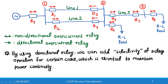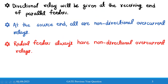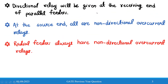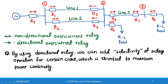I have noted three important points for choosing directional versus non-directional relays in the circuit. The first point is that a directional relay will be placed at the receiving end of parallel feeders. We have parallel feeders line one and line two, so the directional relays will be at the receiving end — therefore R3 and R4 will be the directional relays.